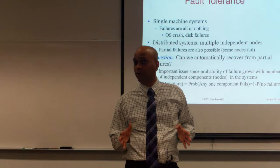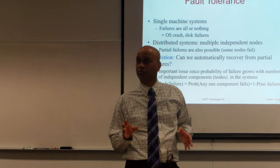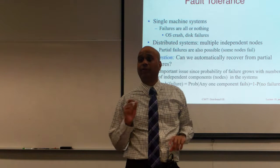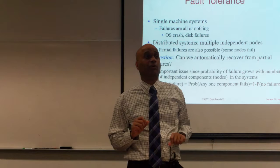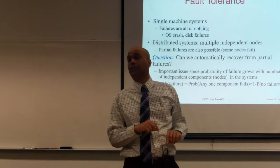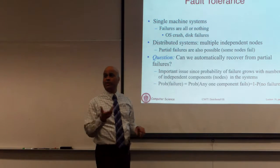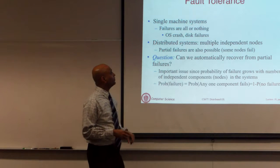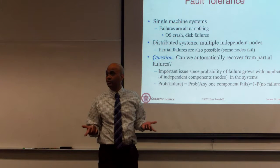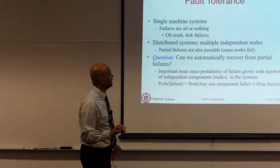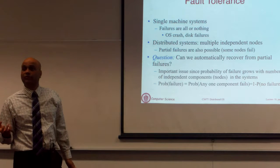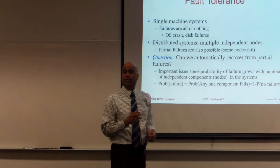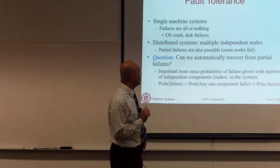In a distributed system, if all nodes fail, nothing can be done. But assuming some subset of nodes fail, you can continue to function. The question is how can we recover from these partial failures and what techniques to use. Why is this specifically important in a distributed system? If you have n components, the probability that any node fails keeps growing as the number of nodes grows, assuming independent failures.